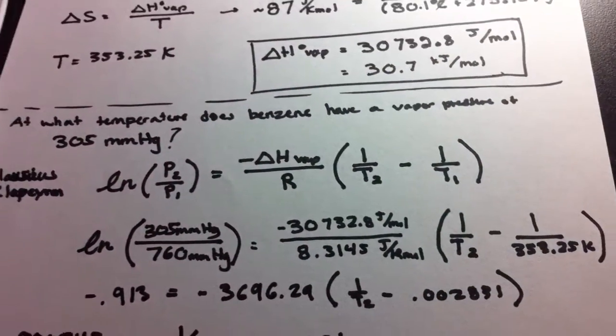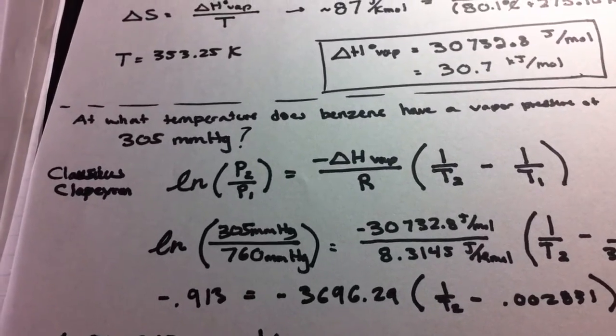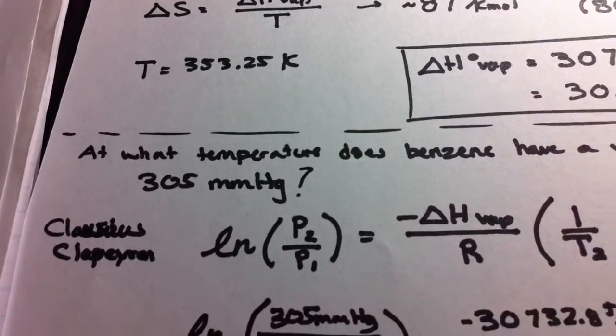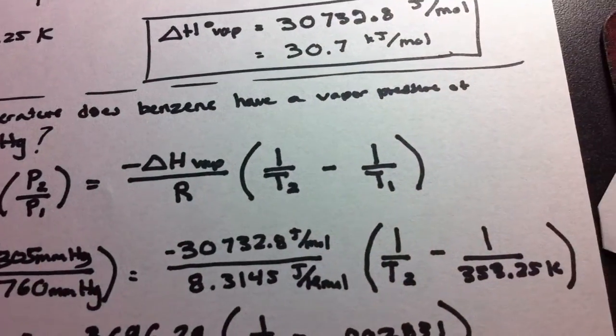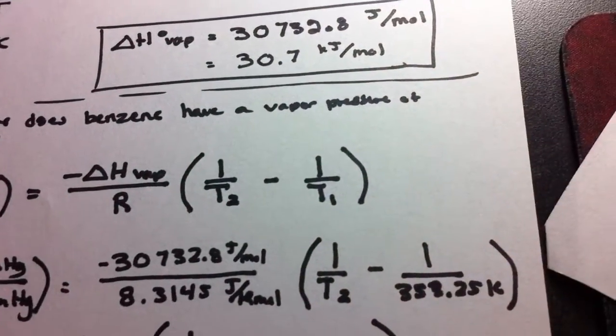If we simplify all that, we're going to get the natural log simplifying to, oh right, for the pressure too, we're going to use 305 milligrams of mercury. And that's what we're going to have there, because what we're trying to find is the temperature at which benzene has this vapor pressure.